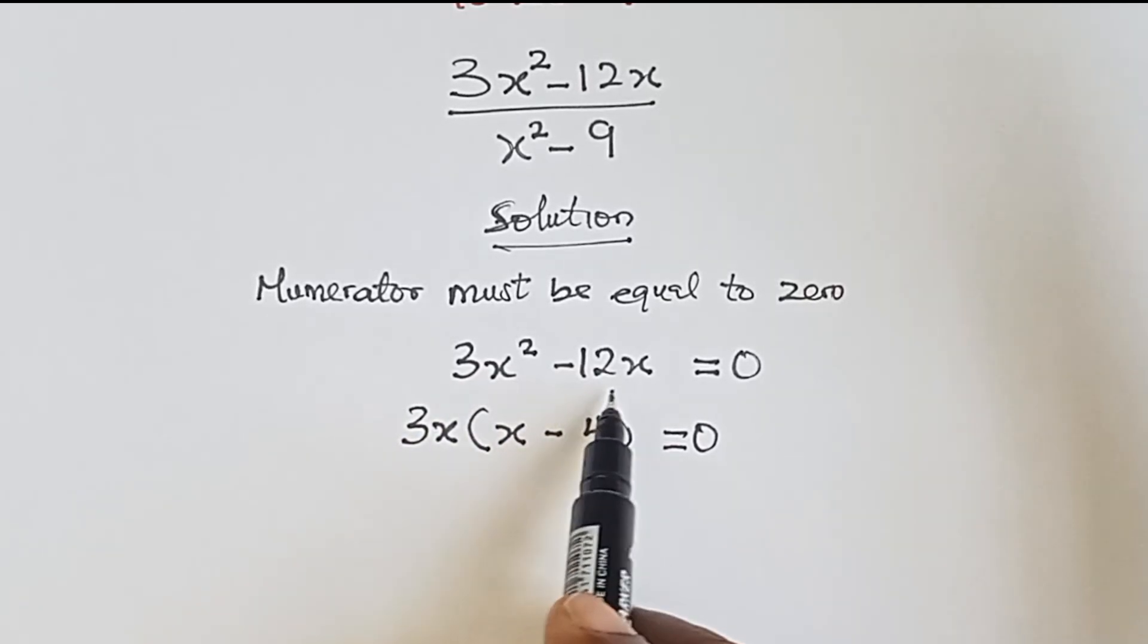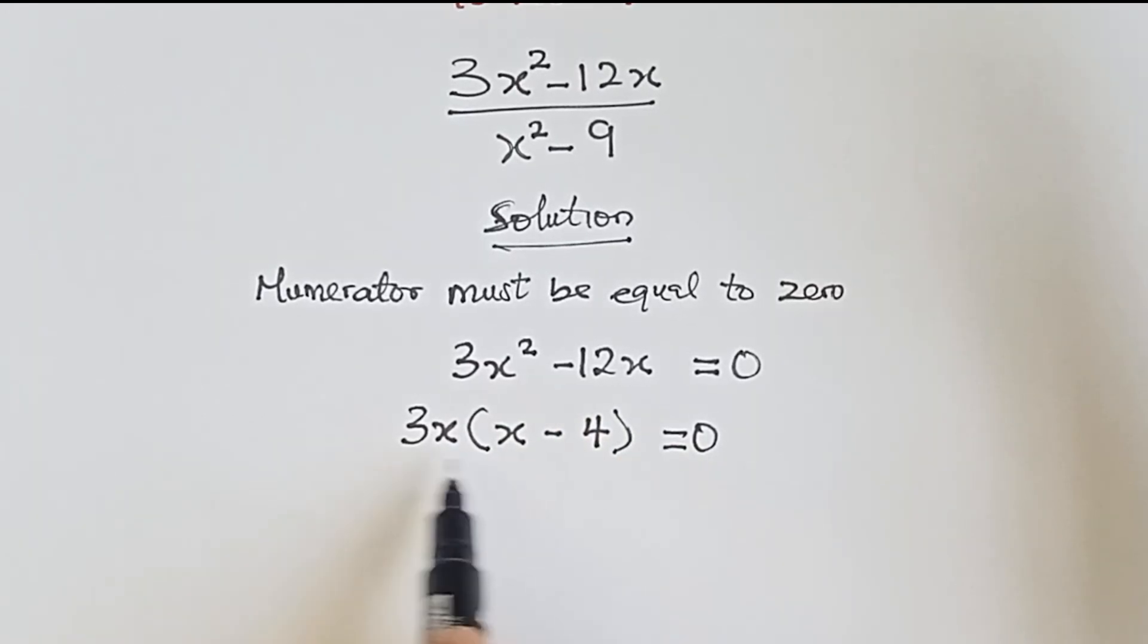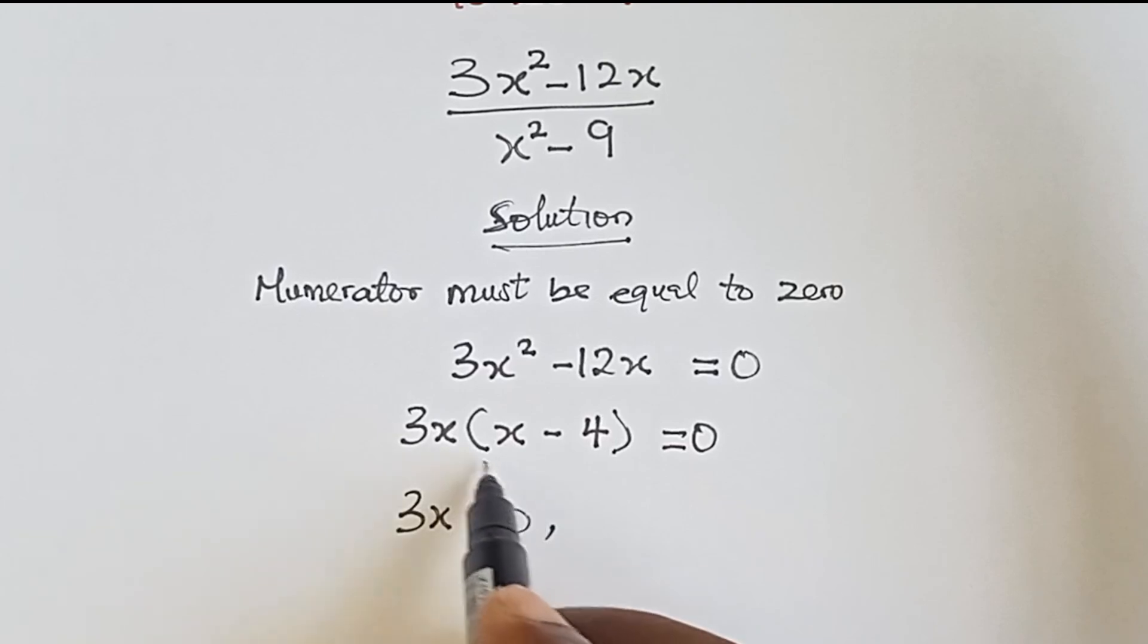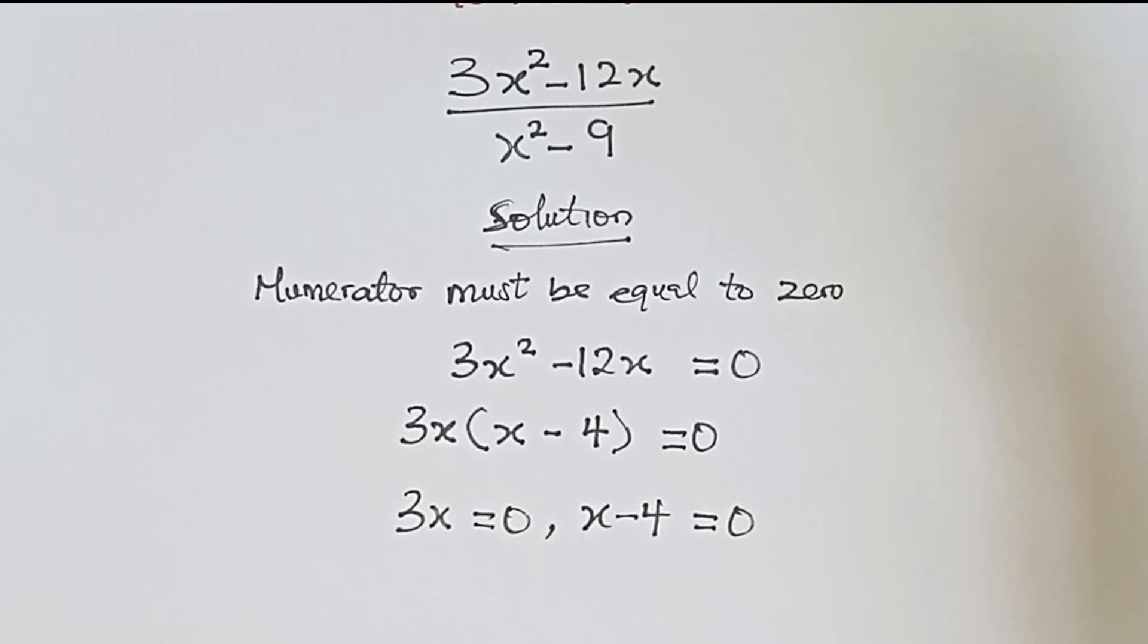Then this 3x equals zero, and then we have x minus 4 equals zero. We divide both sides by 3 here.